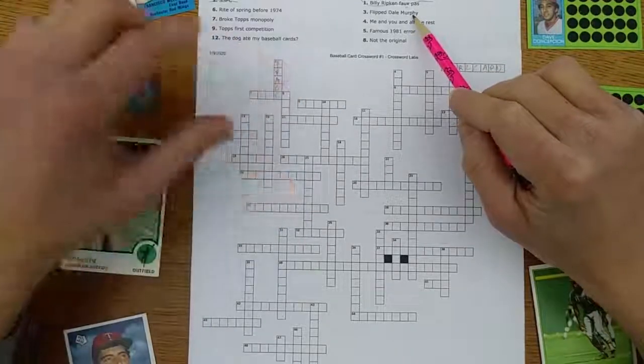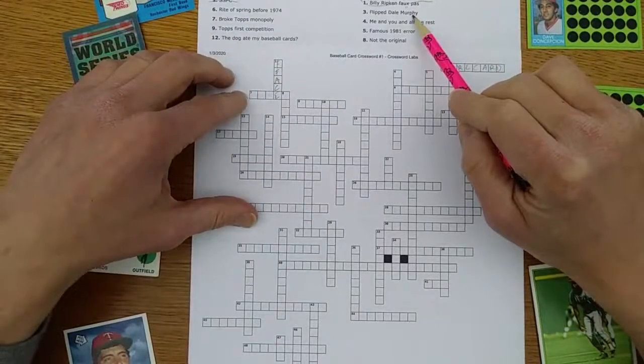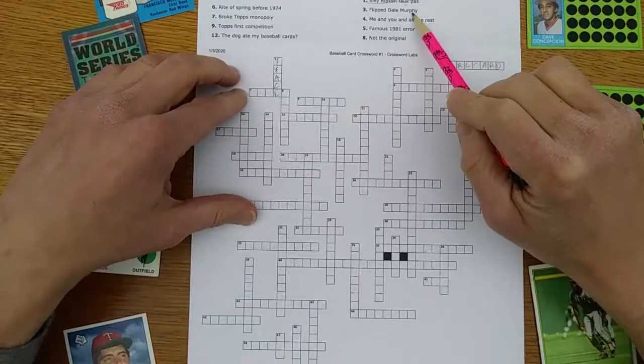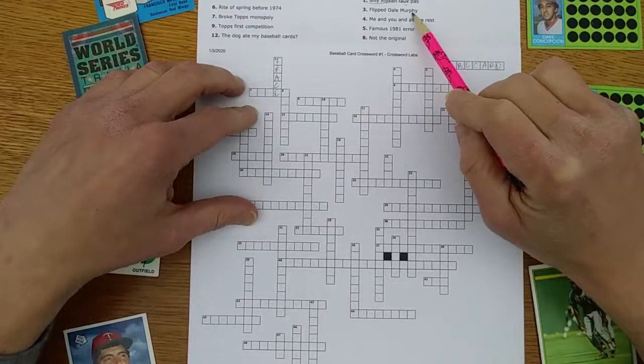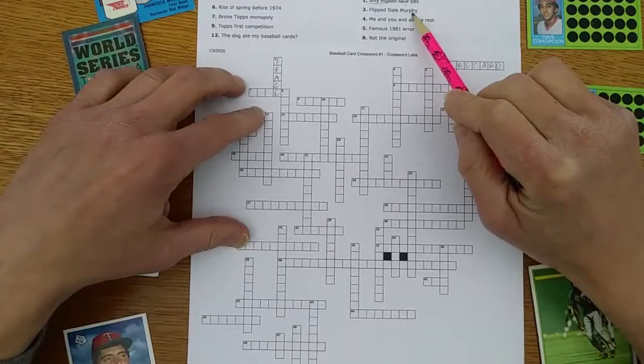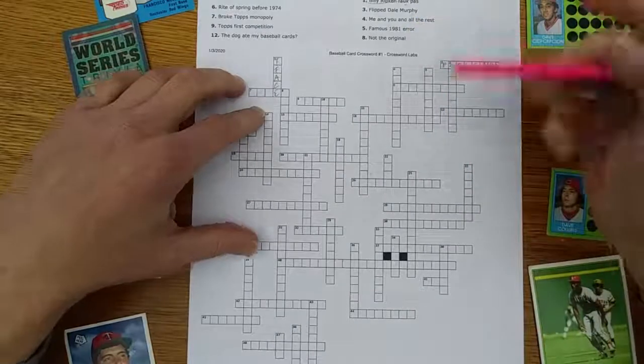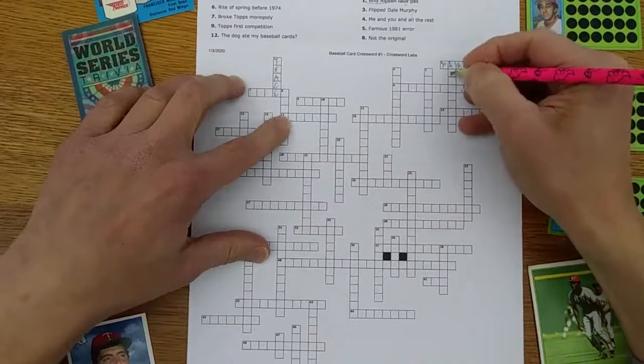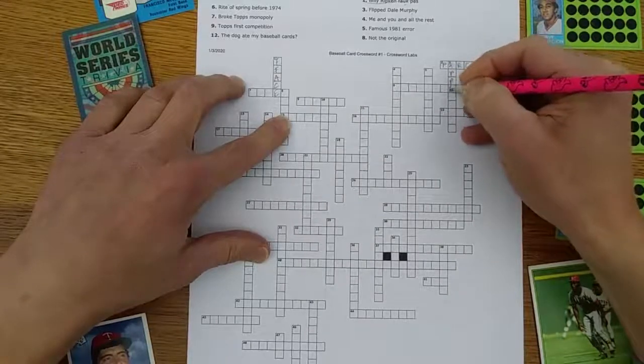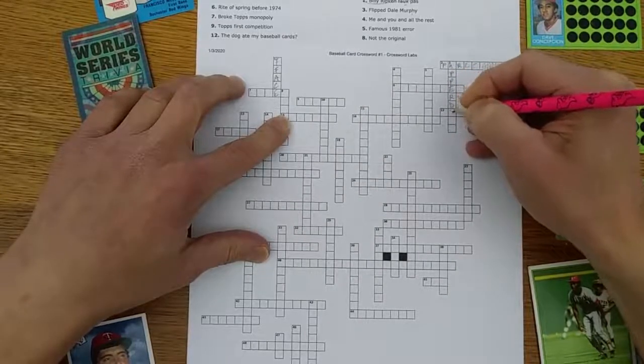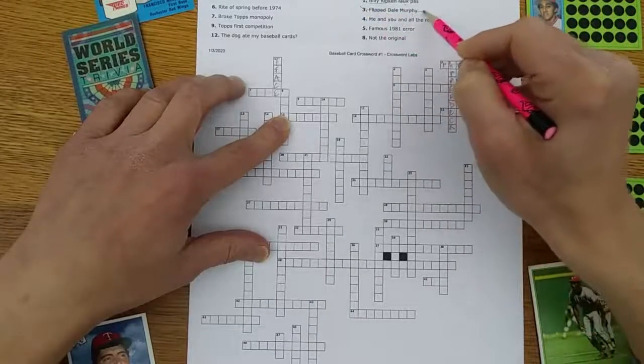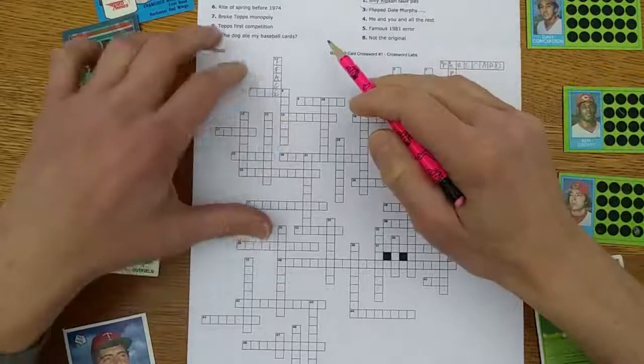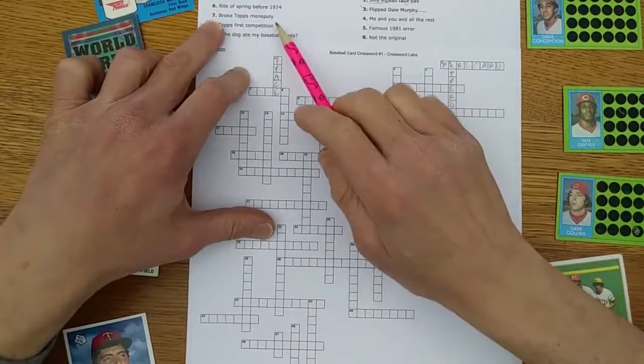Flipped Dale Murphy: Upper Deck flipped the negative on Dale Murphy's 1989 card. I think it was the proof card, could have been the actual issued card, but I'm not sure about that. Anyway, it's Upper Deck. I believe, I could be wrong on this one, but I think there was a corrected version. I'm just not sure about that one.